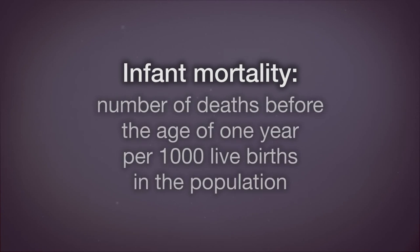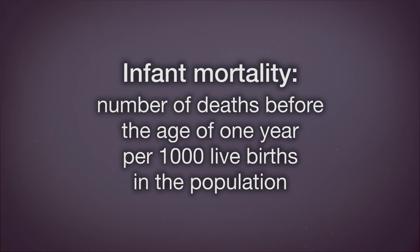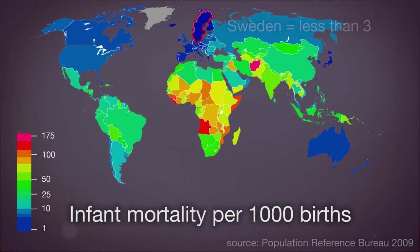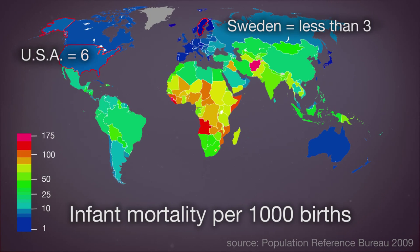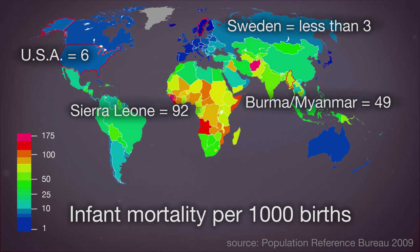Infant mortality is the number of deaths before the age of one year per 1,000 live births in the population. Infant mortality in Sweden is less than 3; in the U.S. it's closer to 6. In some countries it can be 50, 60, or even 100 deaths before infants reach age 1 for every 1,000 live births. Access to clean water, food, health care, and war are among the many reasons for the varied infant mortality rates around the world.